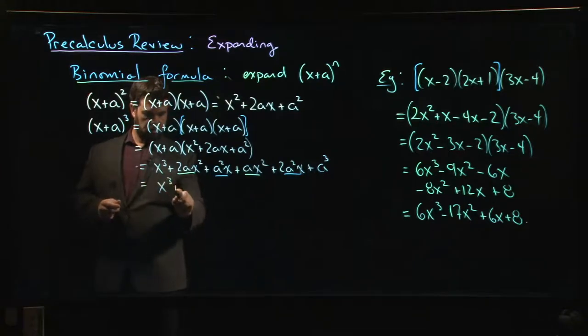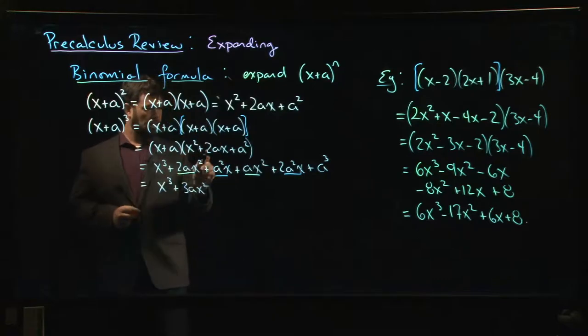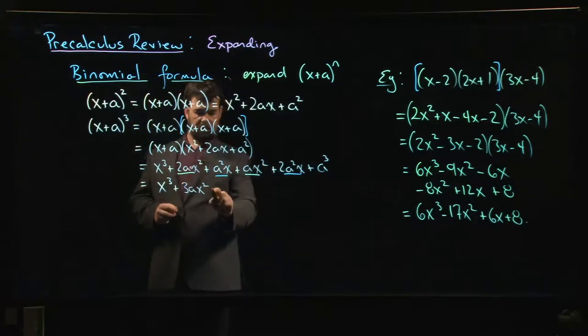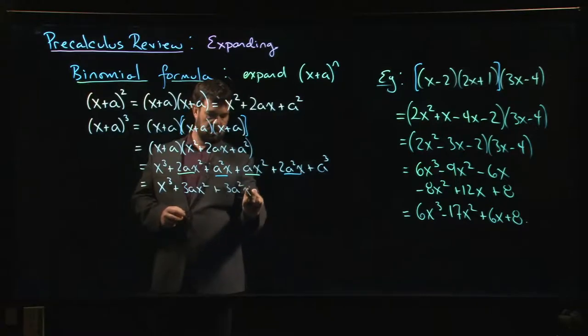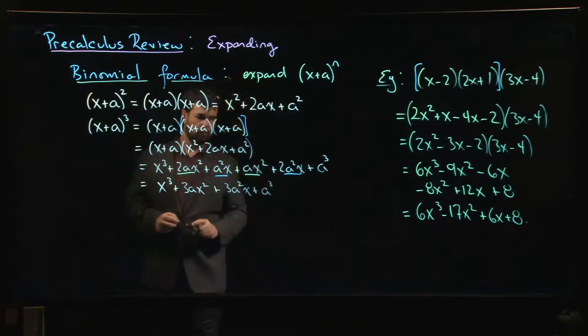x³ plus 3ax²—because there's two there and one more there—then 2a² plus another a² is 3a²x, plus a³. There's your formula for the cube of a binomial.